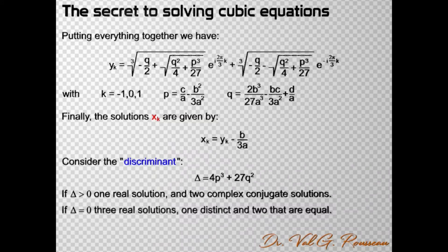If Δ = 0, the square root is 0 and the two cubic roots in y are equal. Thus, y is a sum of two real numbers for k = 0 and a sum of two complex conjugate numbers for k = 1 and k = -1, which is also a real number. The result is the same whether k = 1 or k = -1. So, we have three real solutions, one that is distinct and the two others that are equal.